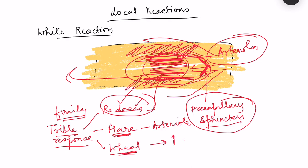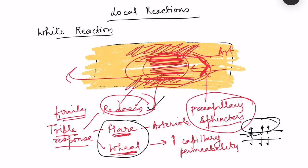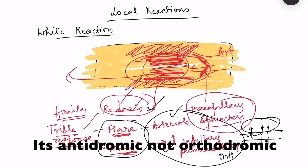The wheal occurs due to an increase in capillary permeability. When capillary permeability increases, water flows out of the capillaries into the surrounding tissues — extravasation of fluid — leading to local swelling. So: redness from capillary dilation, flare from arterial dilation, and wheal from increased capillary permeability. This response involves nerves and involves an interesting phenomenon — the only example of antidromic conduction in the body.